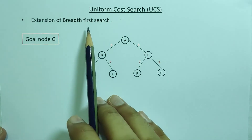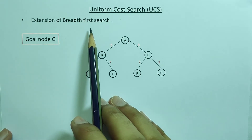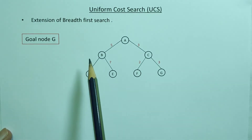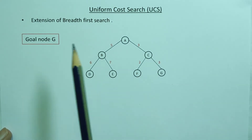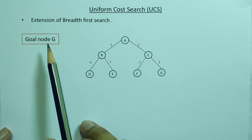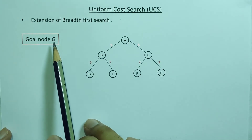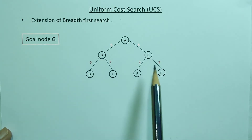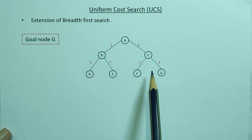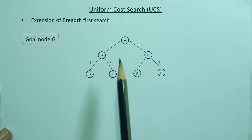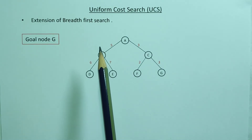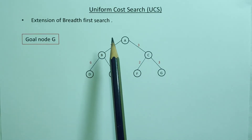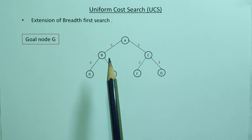UCS is an extension of Breadth First Search. We grab a node and get its cost. The main goal is to navigate to a strategic level using the lowest cost path, using your experience and the quality of the search.